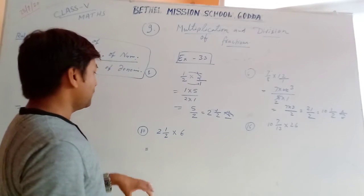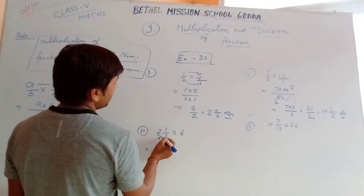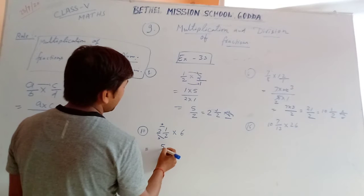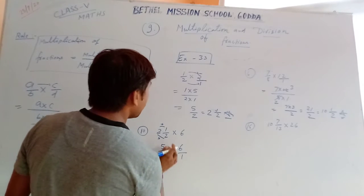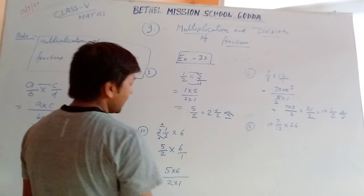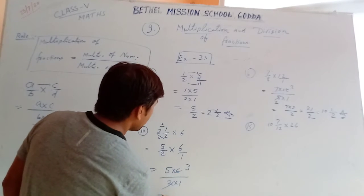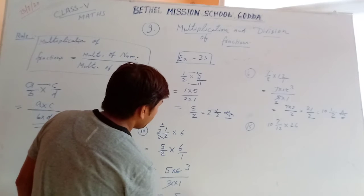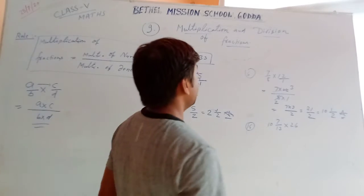Now question 10: a mixed fraction is given. First change into improper fraction. 2 times 4 plus 1 equals 9, so we get 5 upon 2... multiply by 6 over 1. Multiplication of the numerators: 5 into 6, and multiplication of the denominators: 2 into 1. We can cut by 2 — 2 into 6 is 3 — so now 5 into 3 is 15. The answer is 15.